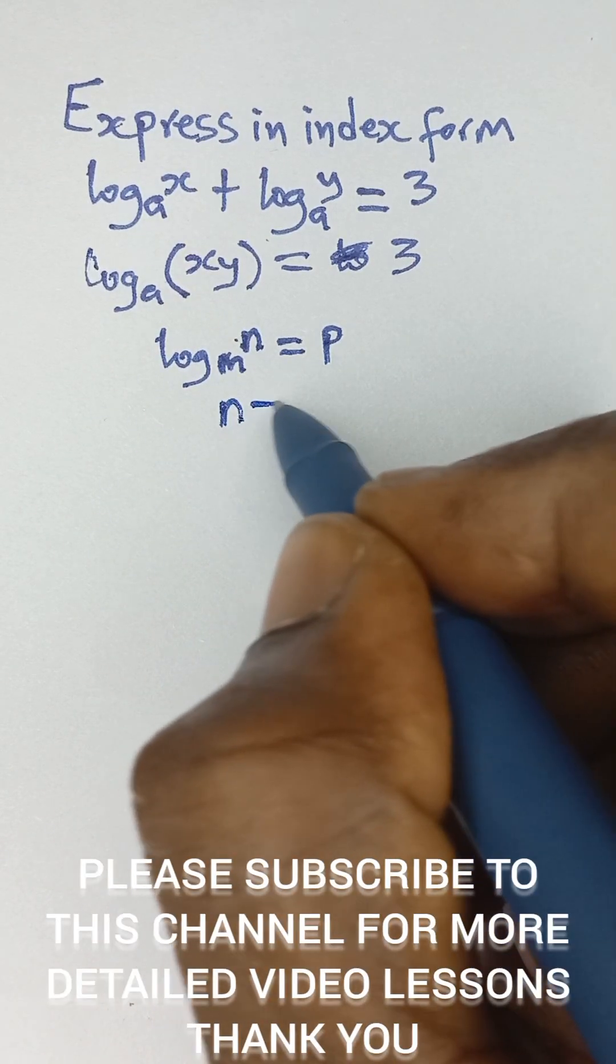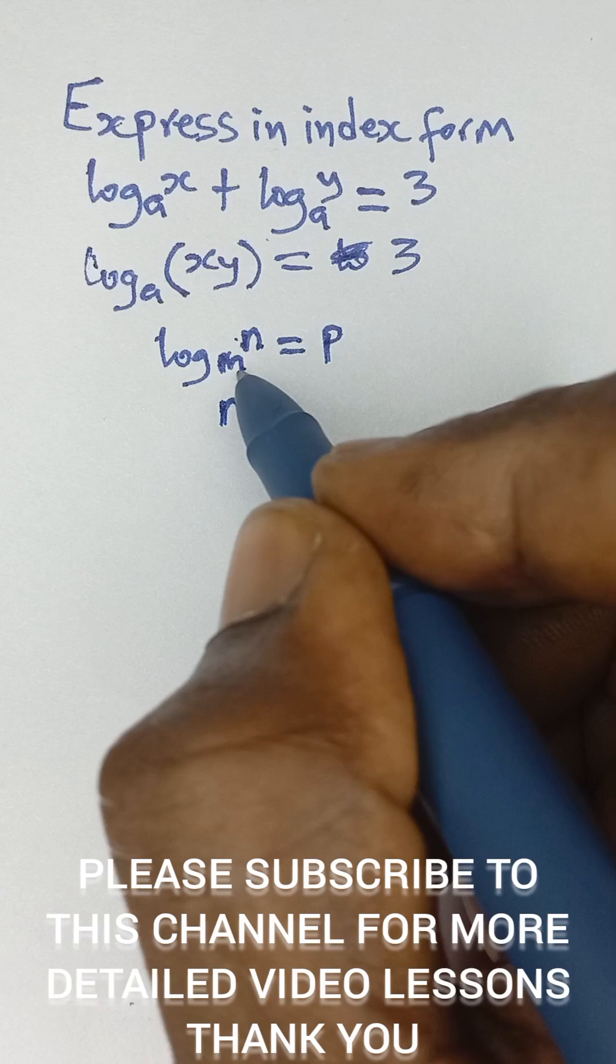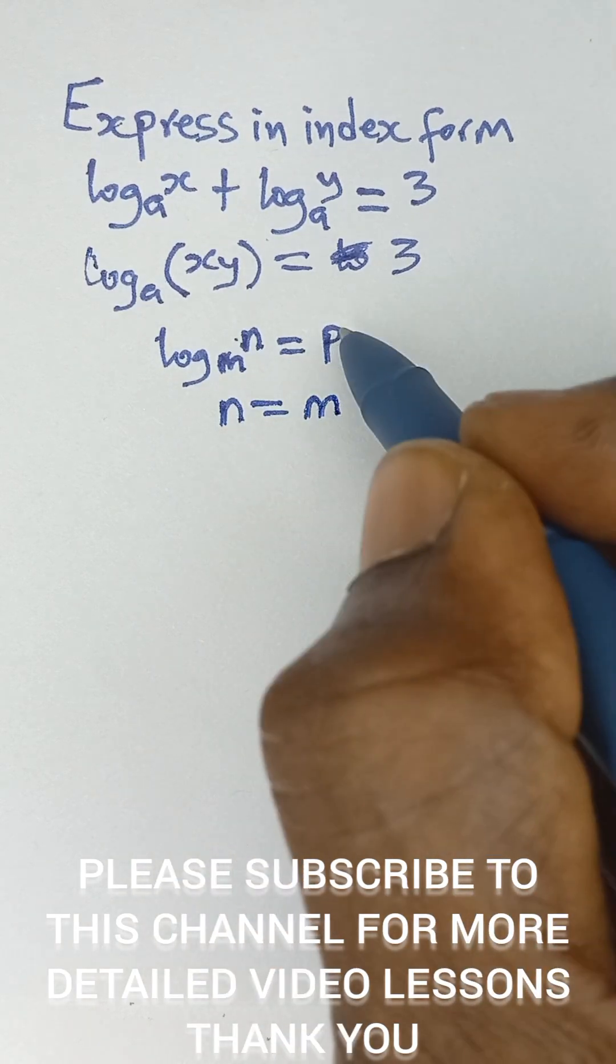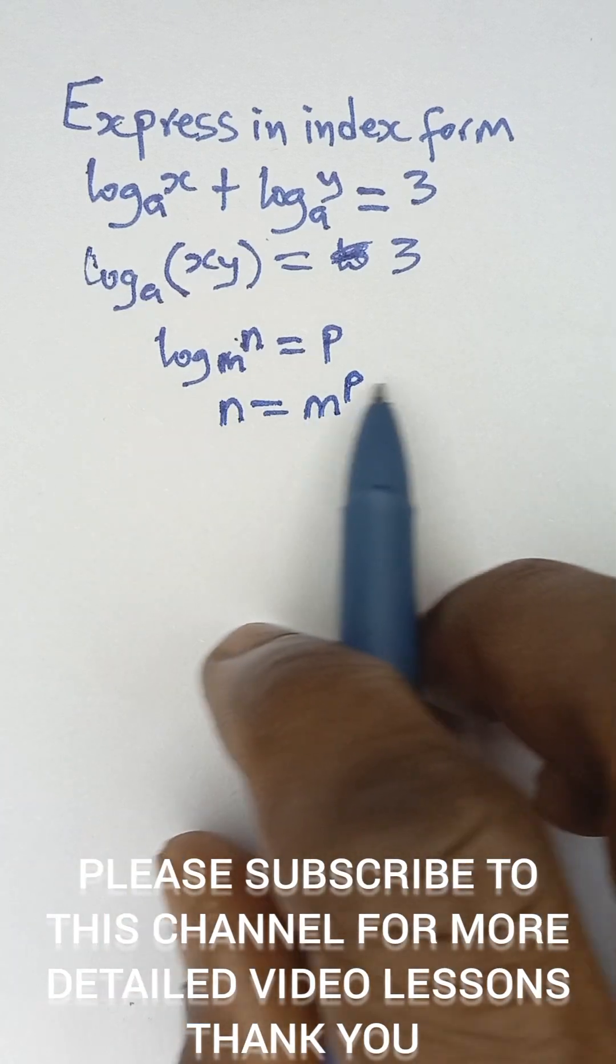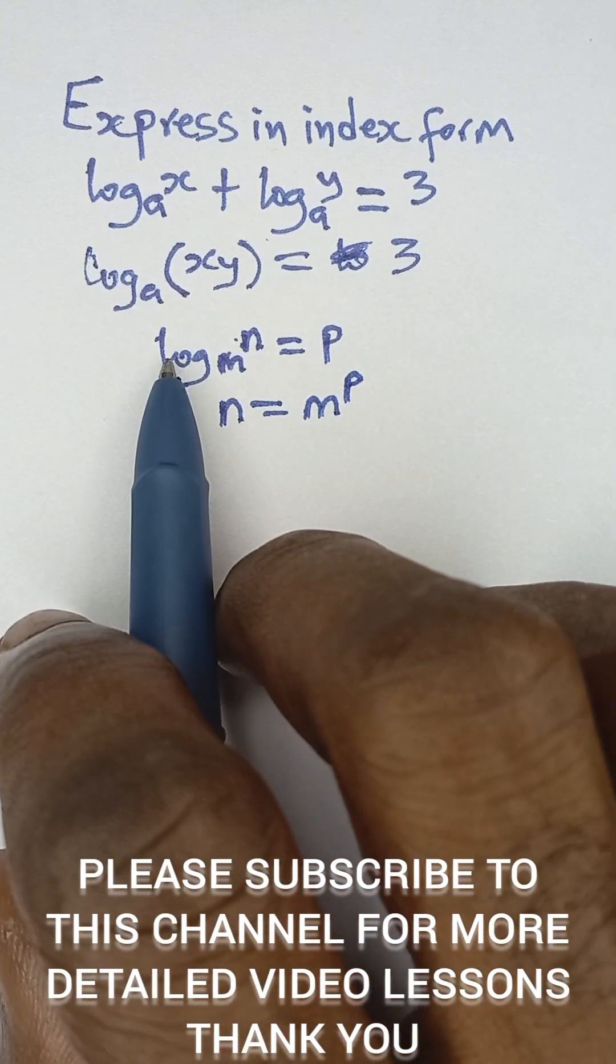What you simply need to do is to take this n here, it will be equal to the base m raised to the power of this answer p.